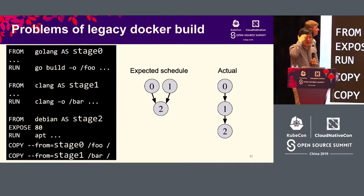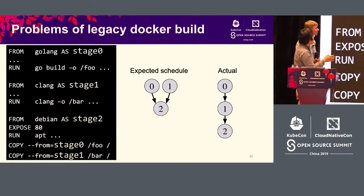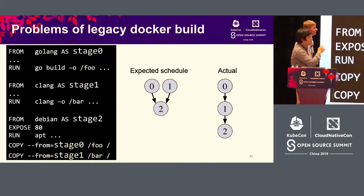The legacy Docker build also has issues in scheduling. In a Dockerfile with three stages, where stage 2 depends on stage 0 and stage 1, in theory we should be able to execute stage 0 and stage 1 concurrently. But in the actual legacy Docker build implementation, everything was sequential. So there is no concurrency in the legacy Docker build.